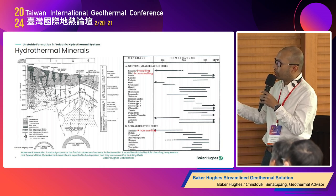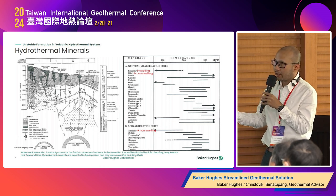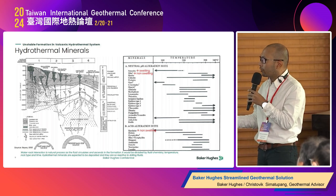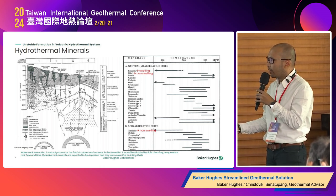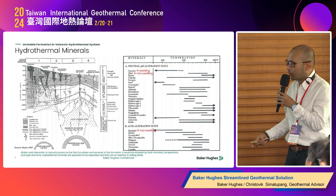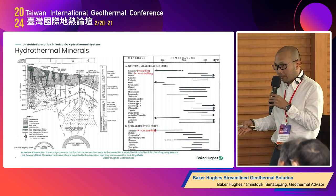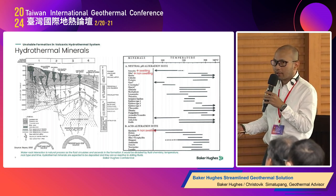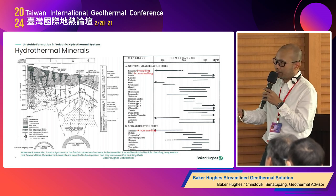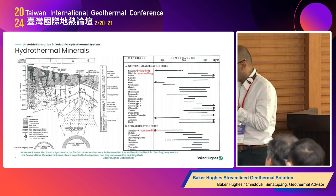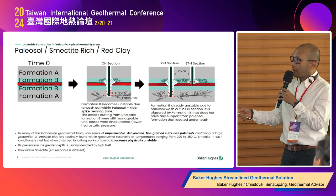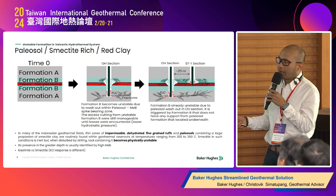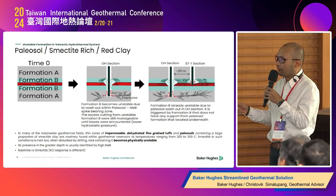It is critical to identify smectite clay in advance — whether it is present in the reservoir and at what depth it will be encountered. If the geothermal fluid is acidic, we are likely to have kaolinite clay. Kaolinite does not swell when exposed to drilling fluid; however, it can easily disperse if the drill bit or BHA penetrates through it. This kind of unstable formation is referred to by three terminologies in Indonesia: paleosol, smectite-rich material, or red clay.